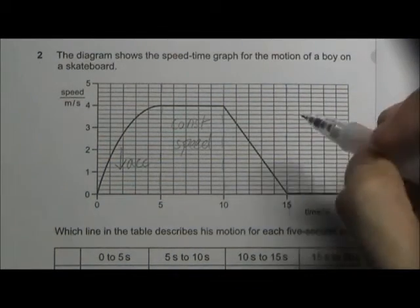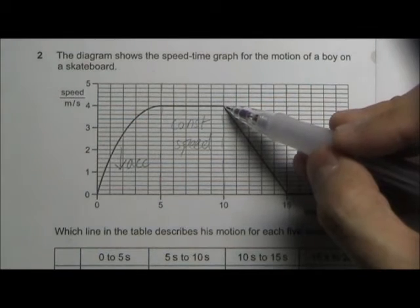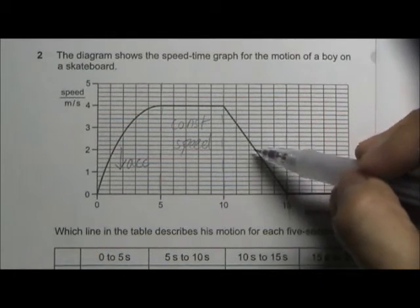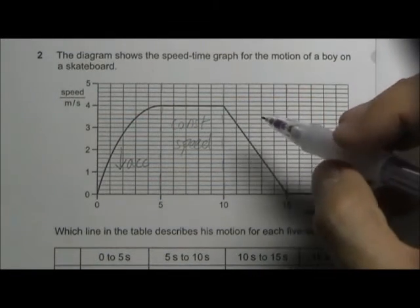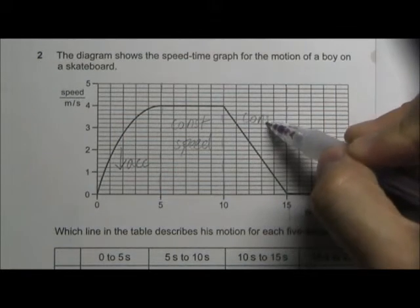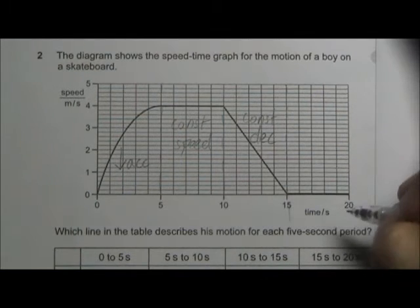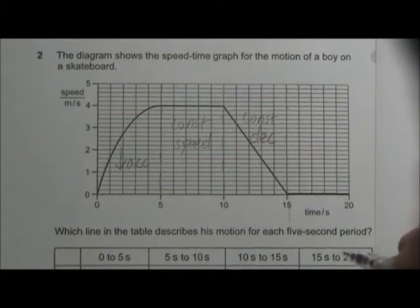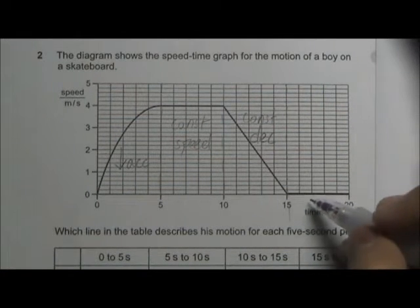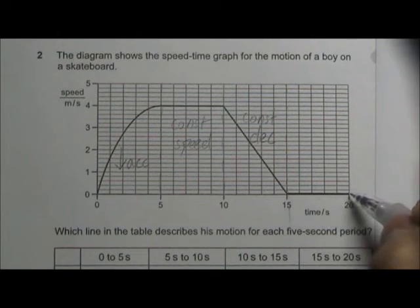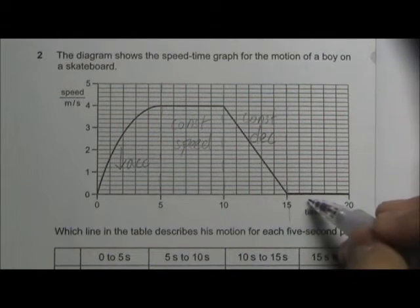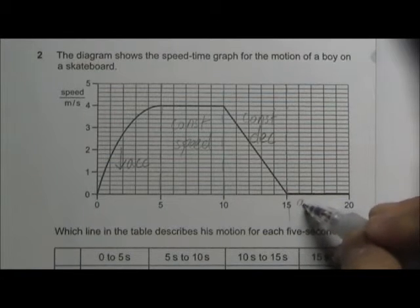In the third portion, the gradient is decreasing at a constant rate, so we can say that this is constant deceleration. And the last part, the speed is zero from 15 seconds to 20 seconds. So we can say that at this portion, the object is at rest.